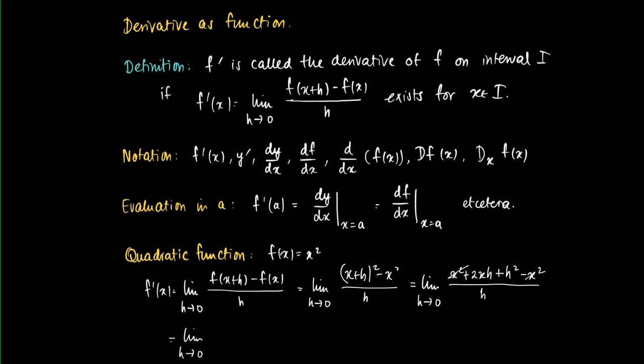x squared cancels against minus x squared. We are left with 2xh plus h squared divided by h, which gives 2x plus h. We substitute the value 0 and get 2x. So the derivative function is given by f'(x) equals 2x for any value x in R.